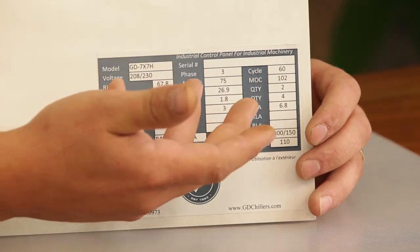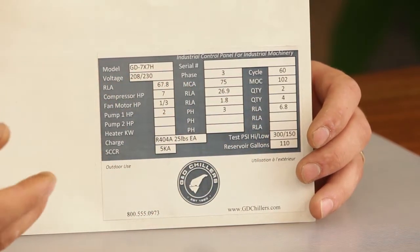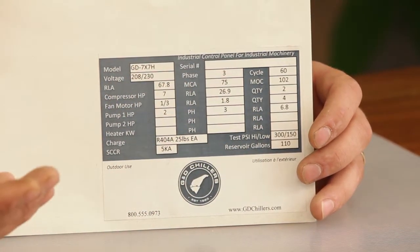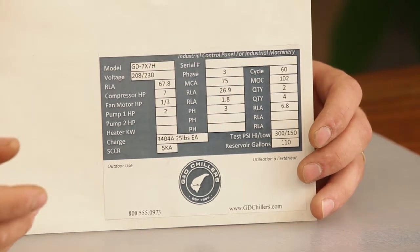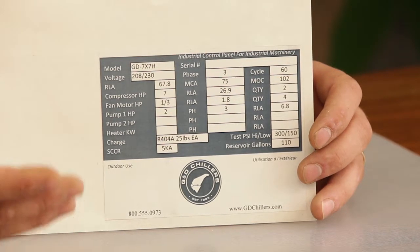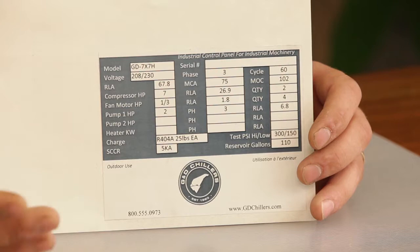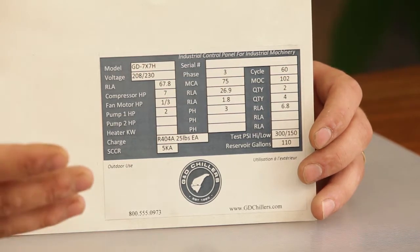You want to size your breaker between the MCA and the MOC. The MCA is the minimum circuit amperage. That's the minimum amount of amps we need to supply the machine. The MOC is the maximum overcurrent protection. That's the maximum amount of amps you want to have fed to that machine at any given time.